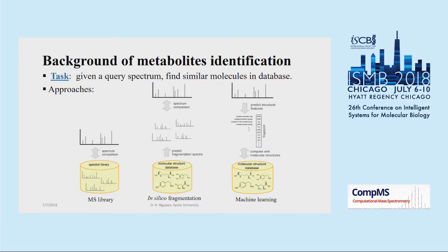The first approach is the mass spectra library. You are given a database of spectra of known metabolites and you just need to compare the query spectrum with spectra in the database. However, the limitation of this approach is that the size of the library is very limited, leading to unreliable results. In the second approach, namely in silico fragmentation, they try to take advantage of a molecular structure database — that is, they predict spectra from molecular structures and then compare them with the query spectrum.